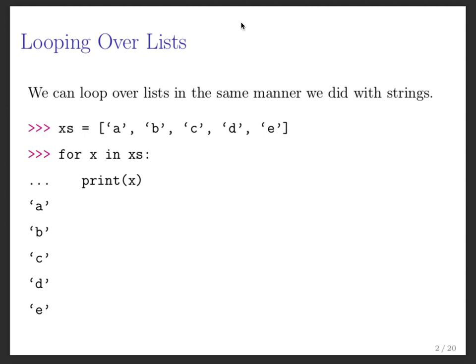I wanted to mention that you can loop over a list in the same way that you could loop over a string. So with a string, we could say something like: for every character in the string, print that character. And for lists, remember the personal naming convention I use: if I have a list of something, I use 's' to pluralize it. So I have one x in a bunch of x's. This statement makes sense — I'm taking one x from a collection of x's. So for x in x's, print x — I'm just stepping through the list and printing each element one by one.